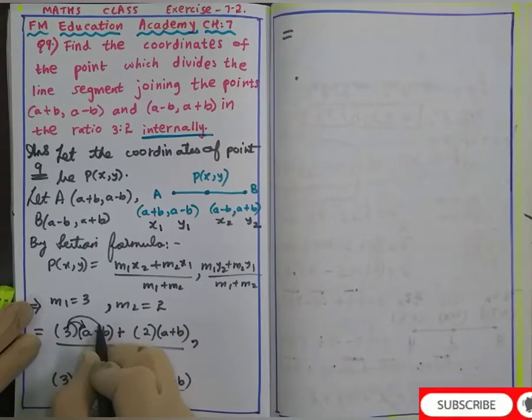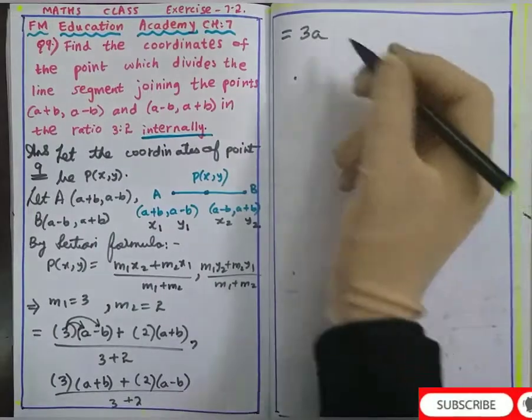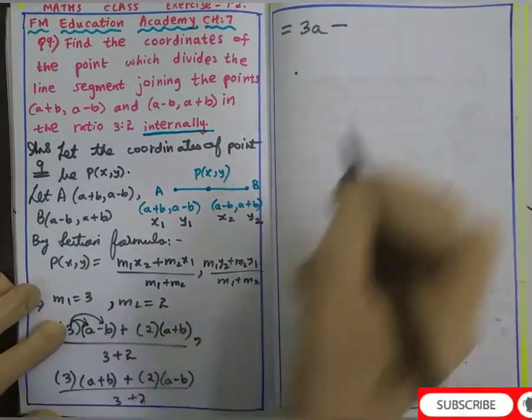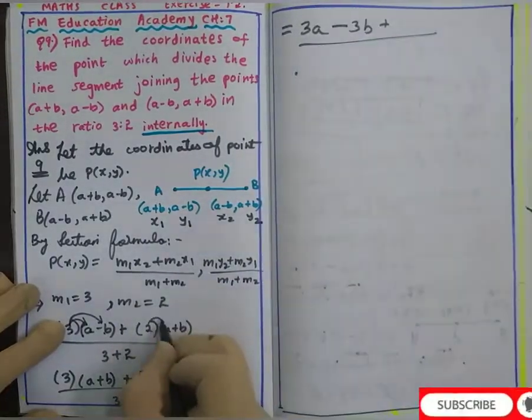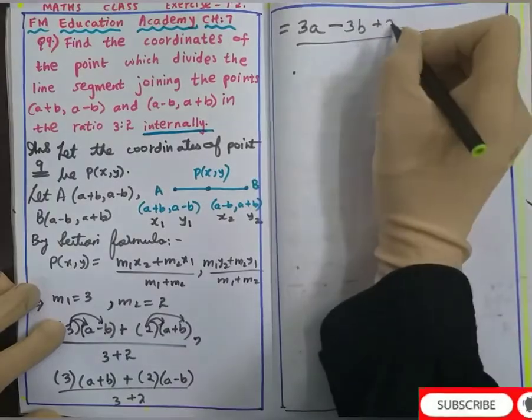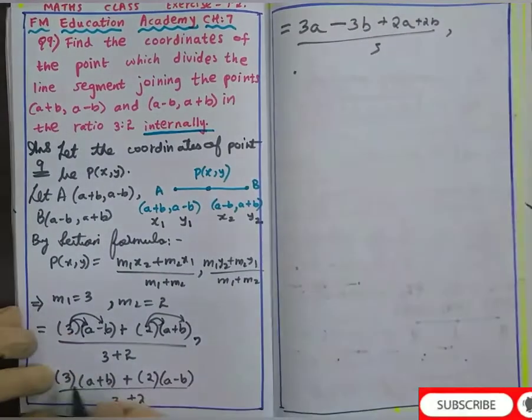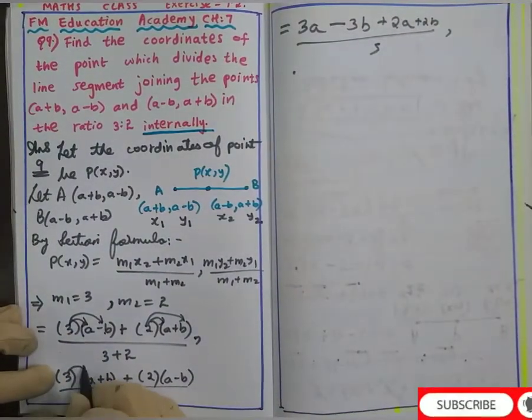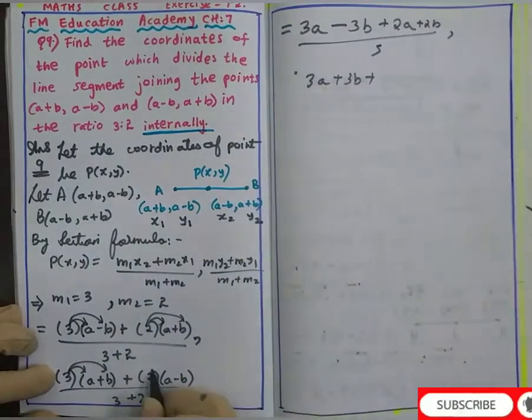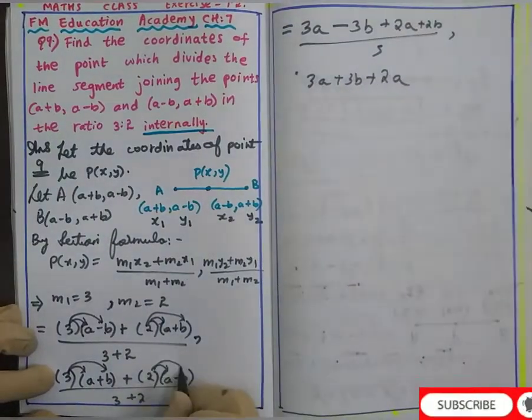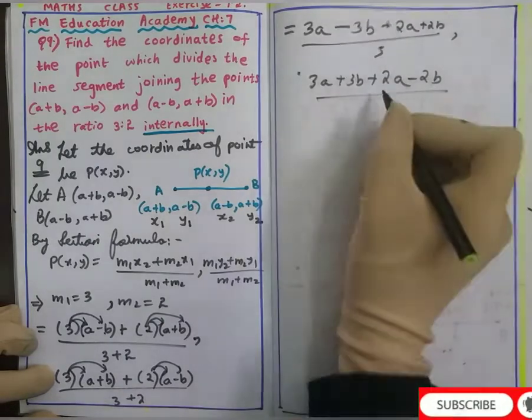Open the brackets: 3 into a is 3a minus 3 into b is 3b plus 2 into a is 2a and 2 into b is 2b by 3 + 2 which is 5. Similarly here, 3 into a is 3a plus 3 into b is 3b plus 2 into a is 2a minus 2 into b is 2b by 5.